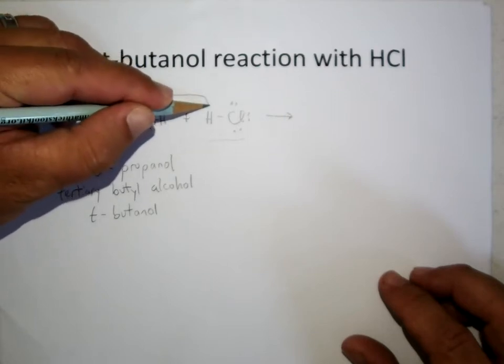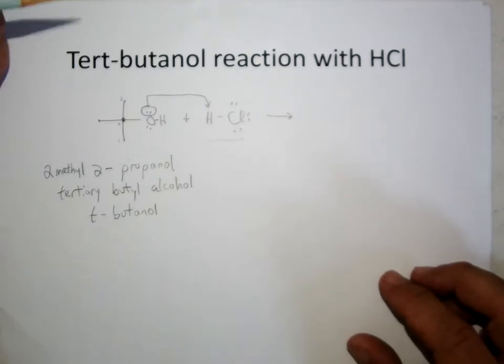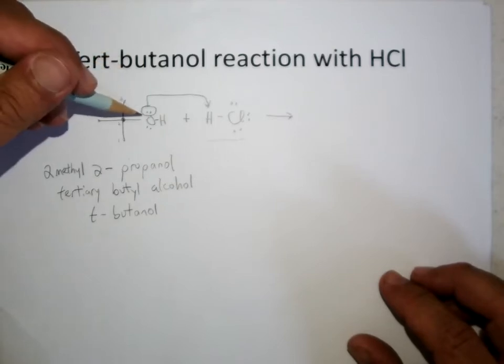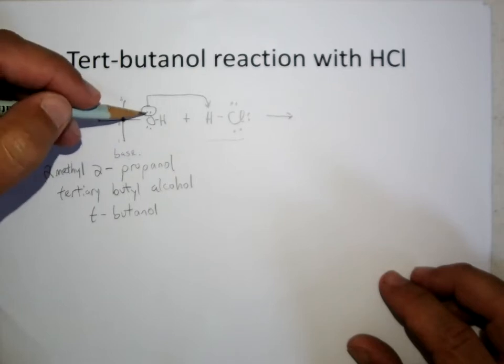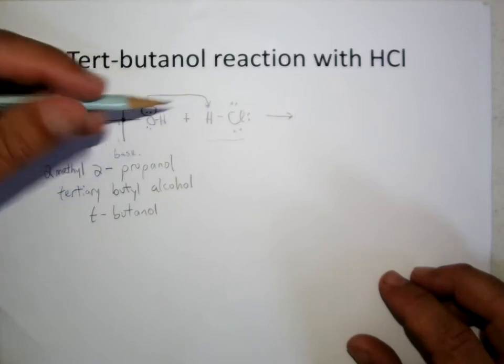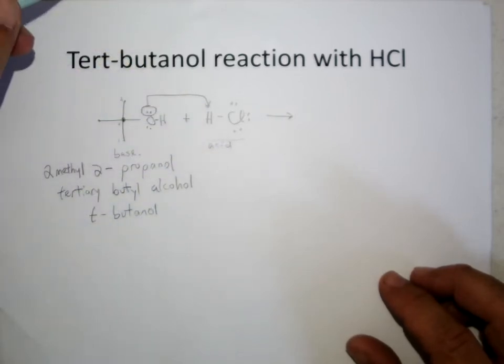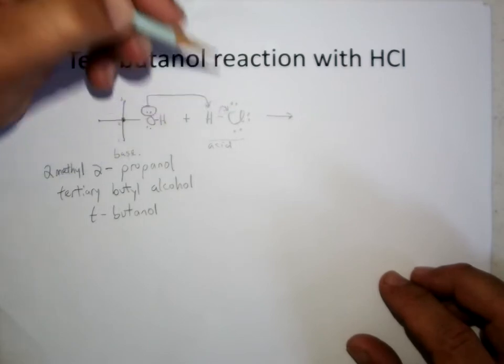The way we draw the mechanism out is the lone pair on the base goes and grabs the H-plus off the acid, and you've heard me say that a bunch of times if you watch the videos. If we had traditional lectures we'd be reviewing more and we'd be seeing this a lot, but the base, in this case the alcohol, is going to have a lone pair of electrons that will go take the H-plus off the acid. So hydrochloric acid, a very strong acid, and then the bonding pair of electrons in the acid becomes a lone pair.